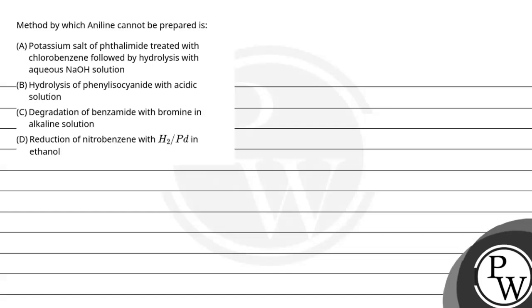Hello, let's read the question. The question says method by which aniline cannot be prepared is: first is potassium salt of phthalimide treated with chlorobenzene followed by hydrolysis with aqueous NaOH. Second is hydrolysis of phenyl isocyanide with acidic solution. Third is degradation of benzamide with bromine and alkaline solution, and last is reduction of nitrobenzene with H2.